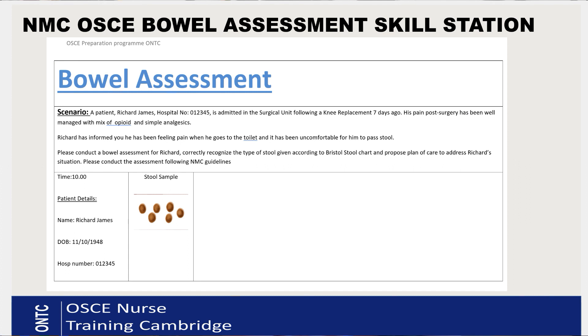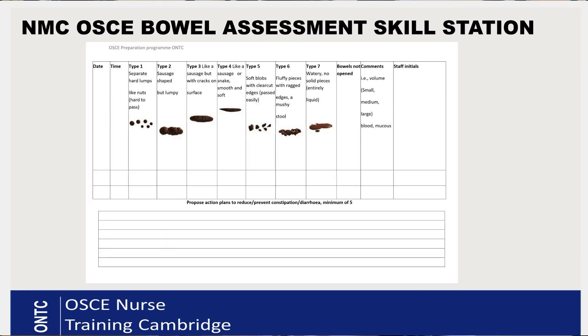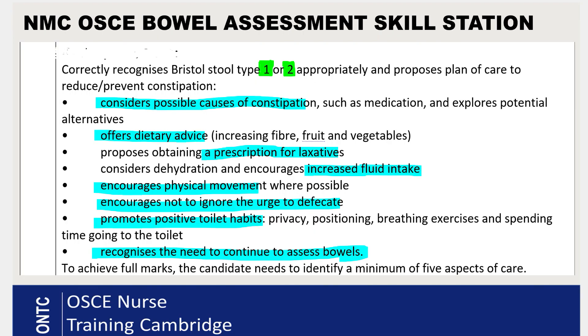Your scenario will be based on either type 1 and 2 or type 6 or 7. You will be given a document to complete where you add the date, time, type of stool, and your initials. You will then be asked to write your proposed action plan — five clear bullet points on how to prevent or manage either constipation or diarrhea depending on the scenario and stool type you are given. That is what you have to do in the full eight minutes.